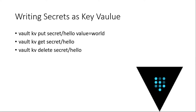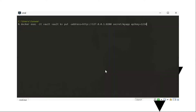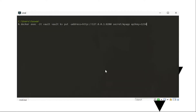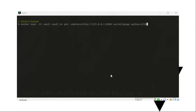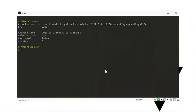So you can see me saying: vault kv put secret/hello value=world. Or you could say the key is api_key equal to 1234. Then you can get that secret and delete it too. Here I'm doing an example — my secret path is secret/my-app, the key is api_key, and the value is 1234. I store it into Vault, then call get on that key and it gives me back the value.